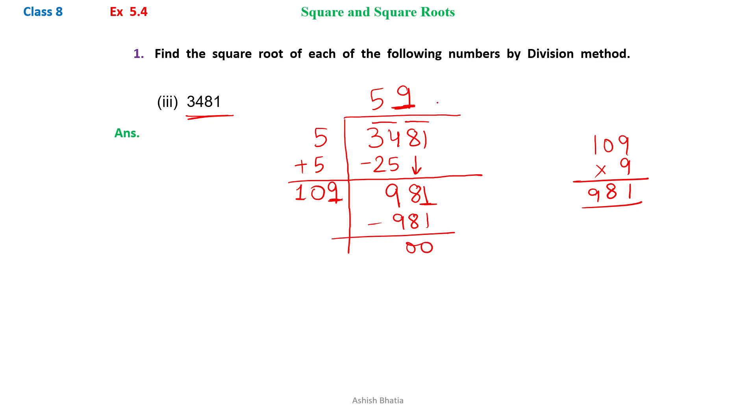And when we subtract we get 00. So our quotient is 59. So we can write down here that √3481 = 59. The square root of 3481 is 59.